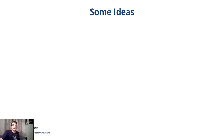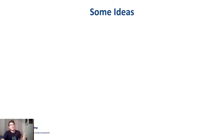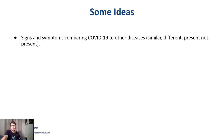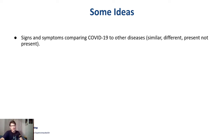Now that you know what negation and uncertainty are, you may be thinking: what can I do with this information? Here are some ideas. You may try to compare the signs and symptoms of COVID-19 to other diseases by checking if the symptoms are similar or different, or present or not present.